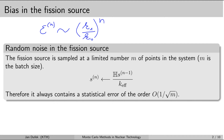The fission source is mixed with random noise because it is sampled by a limited number of neutron histories. If we simulate M neutron histories in one cycle, we sample the fission source at only M sites — there are only M fission neutrons per cycle. The distribution of fission neutrons depends on the random numbers used to sample the neutron histories, so using different random numbers yields slightly different fission neutrons. There is random noise in the selection of fission neutrons at every cycle.